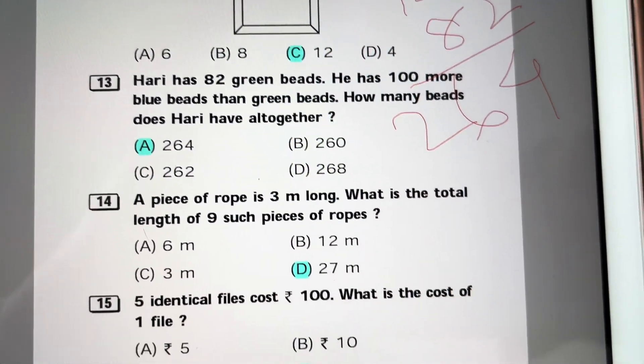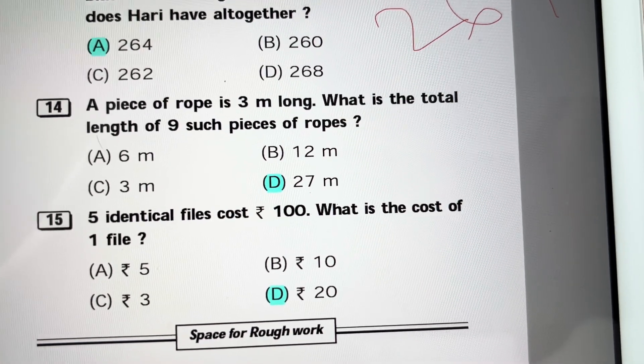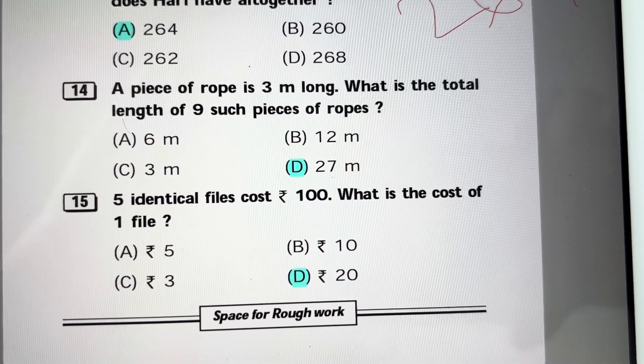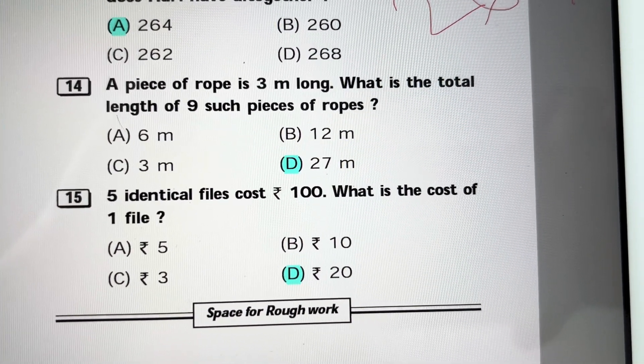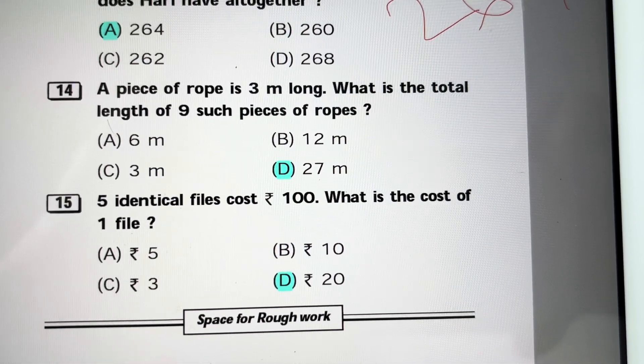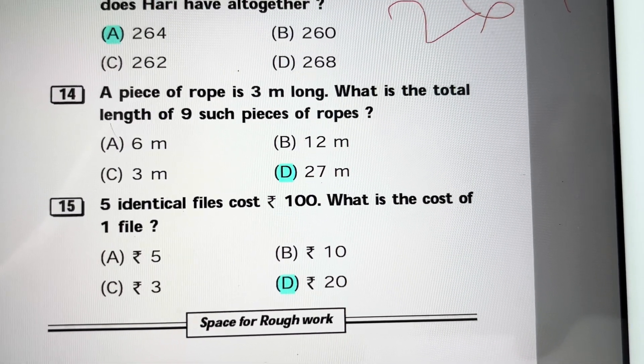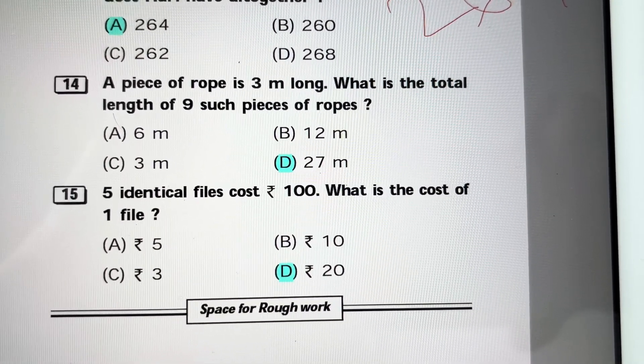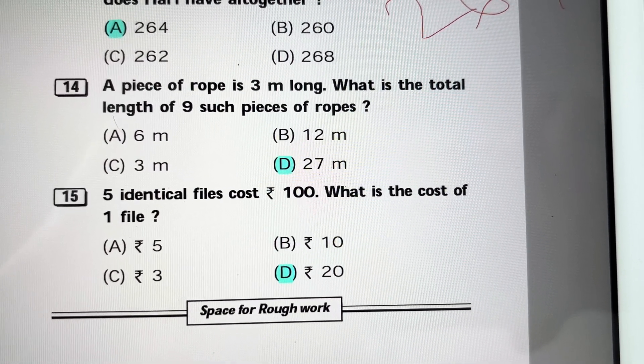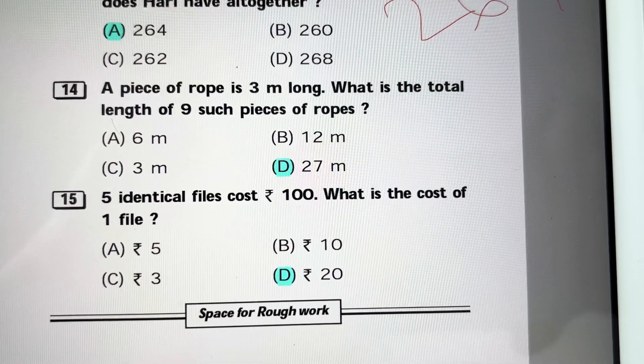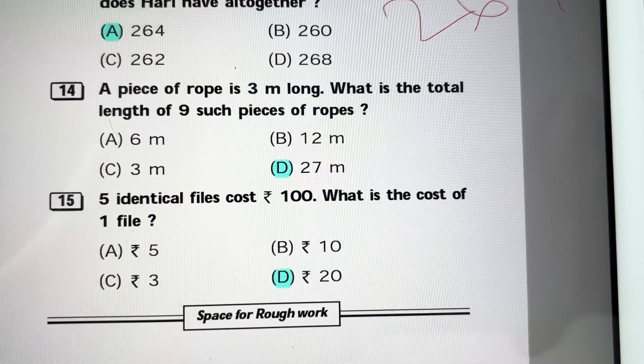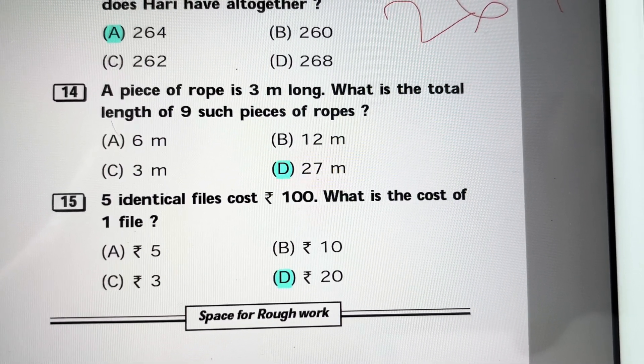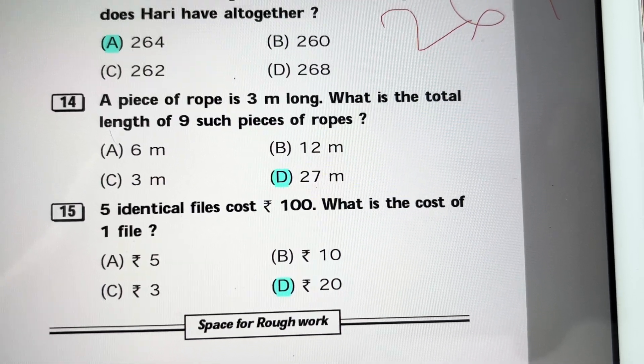A piece of rope is 3 meters long. What is the total length of 8 such pieces of rope? 8 threes are 24. Wait, 9 threes are 27, so answer is D, 27. Five identical files cost 100 rupees. What is the cost of one? 100 divided by 5 is 20 rupees. Answer is D.